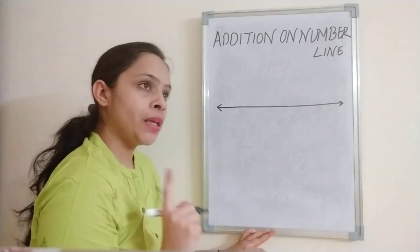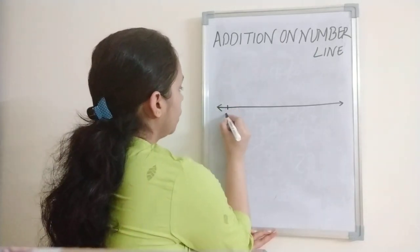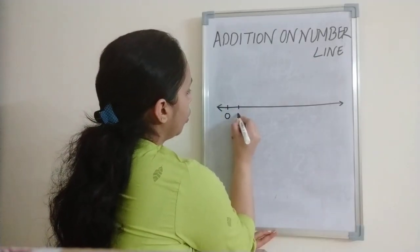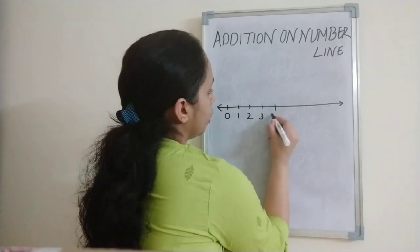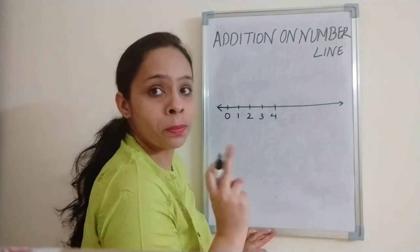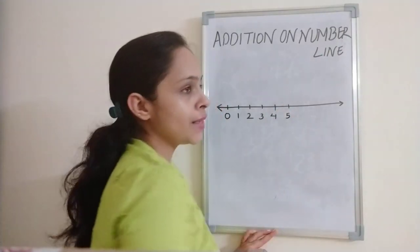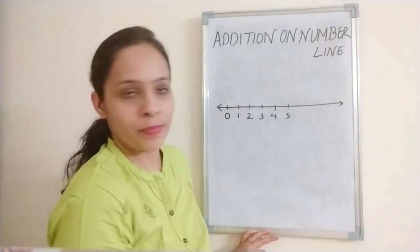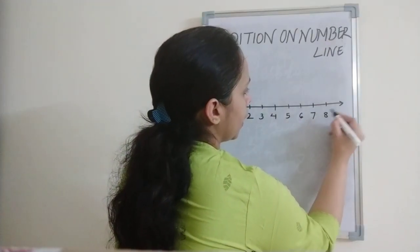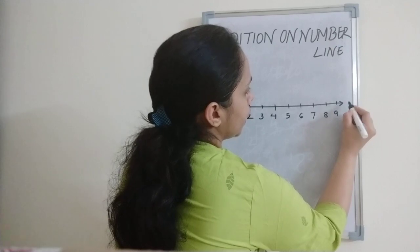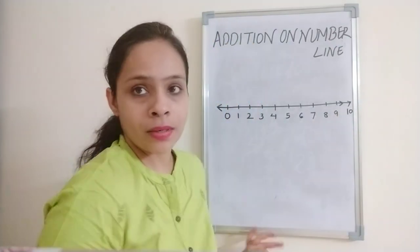We will always start our number line from zero — always remember. Zero, one, two, three, four. I want students to repeat with me. Whenever you are seeing this video at home, repeat with me. Five, six, seven, eight, nine and so on. We can make the number line as long as we want.